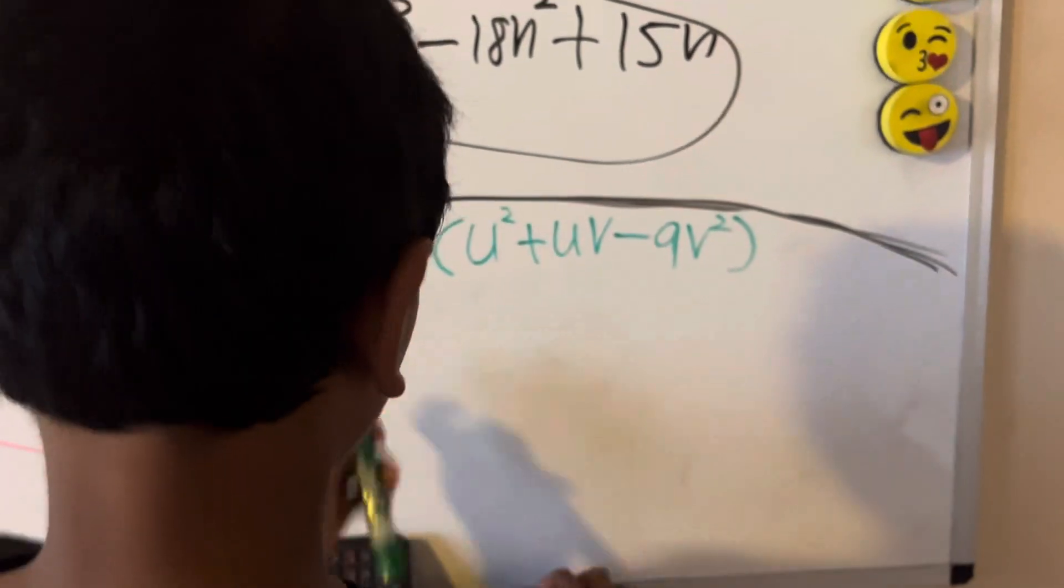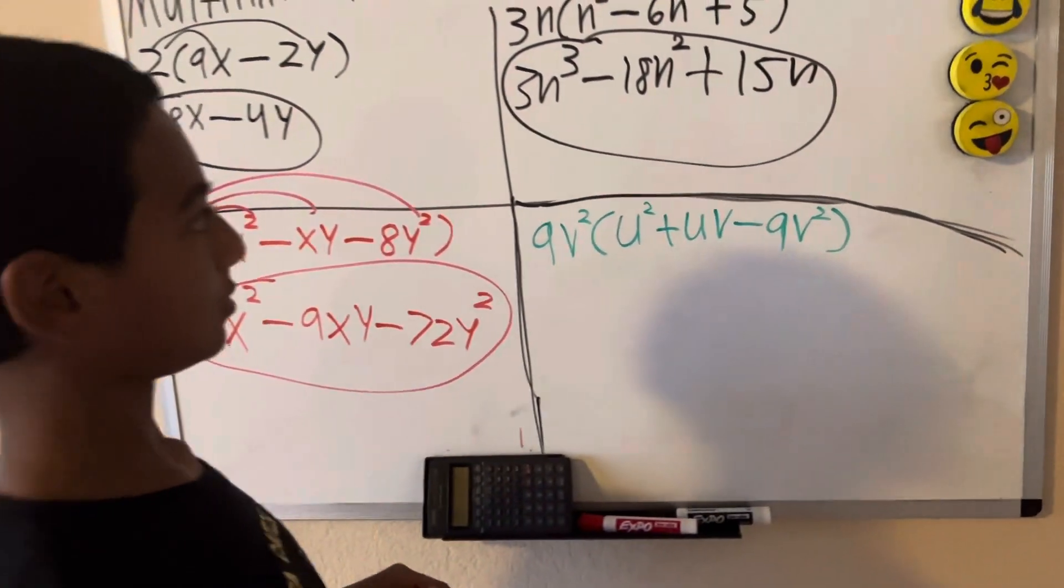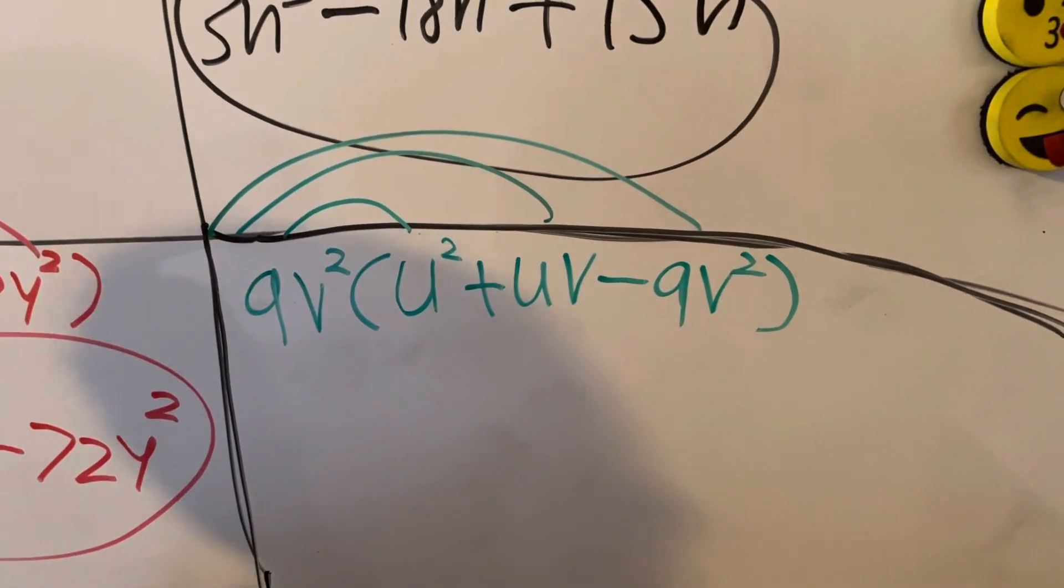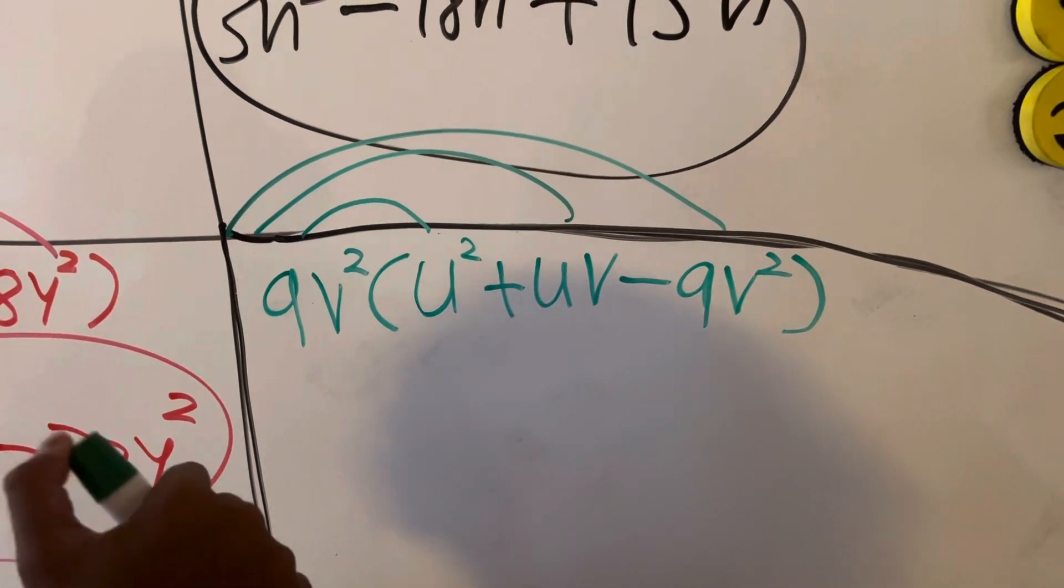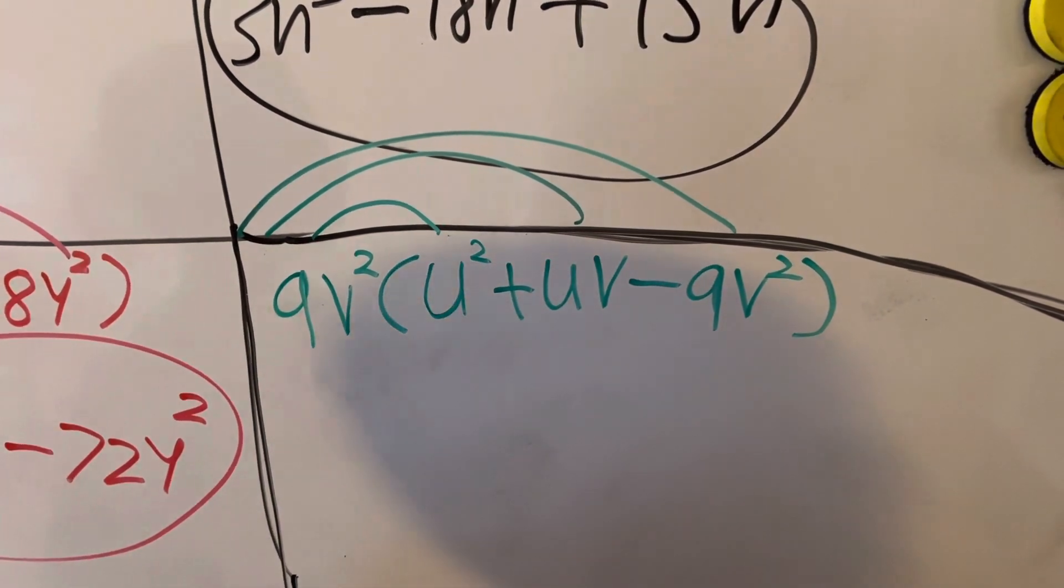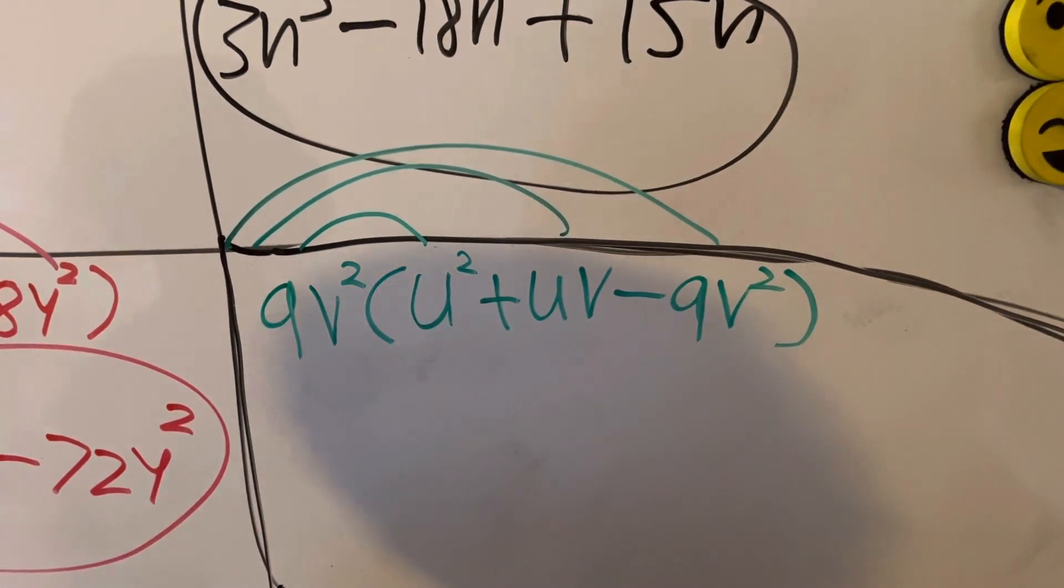Let's go to the green one. Here's where it gets interesting. Let's distribute these as normal through all this. But the thing here is we have 9v squared times u squared. We can't combine two different variables because we don't know what those values are.